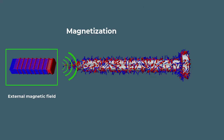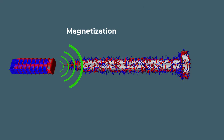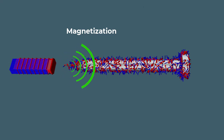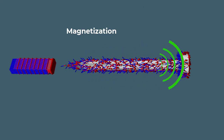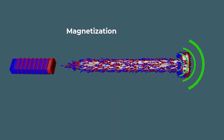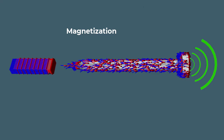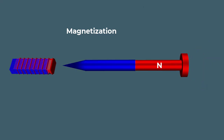To magnetize a material, we place it in a strong external magnetic field. This field exerts a force on the atomic magnetic moments, causing them to align in the direction of the external field.